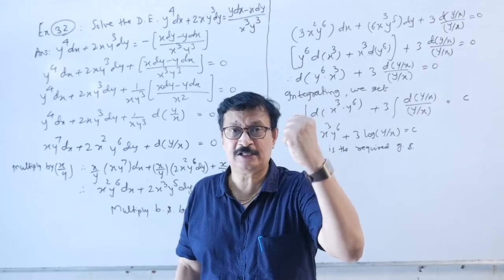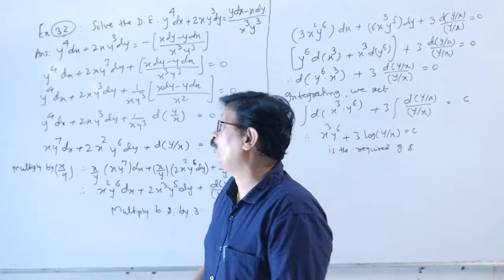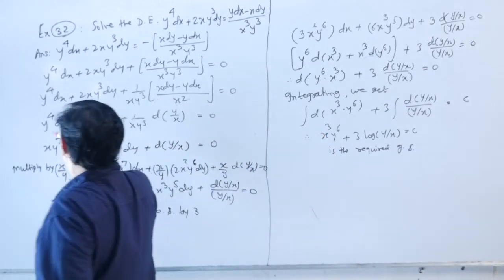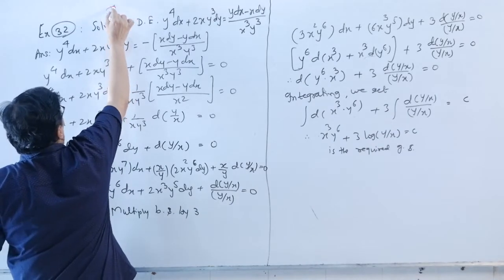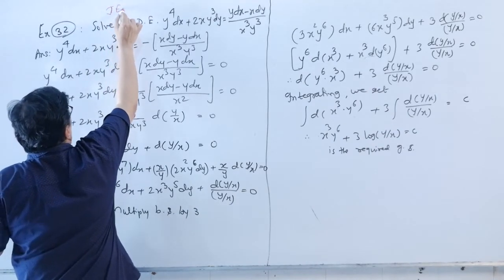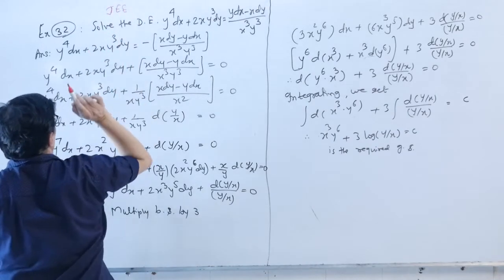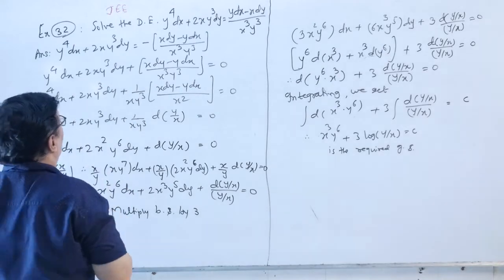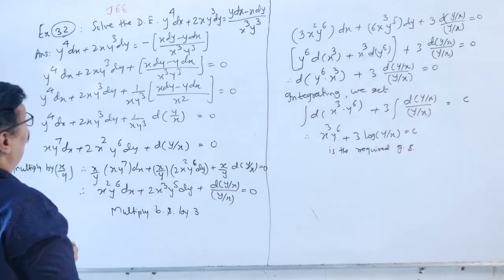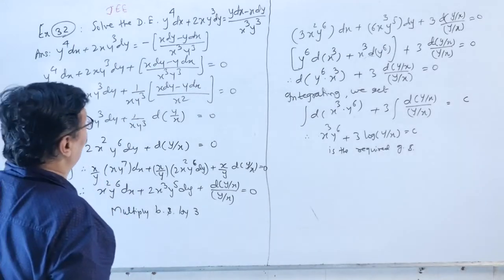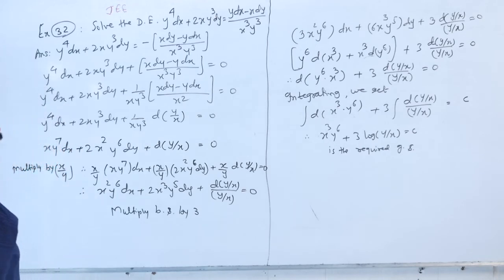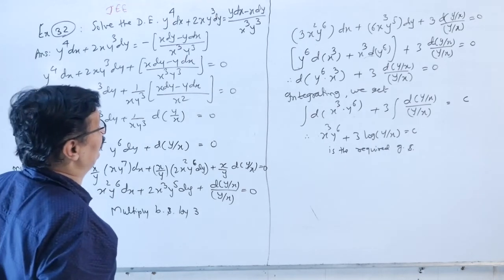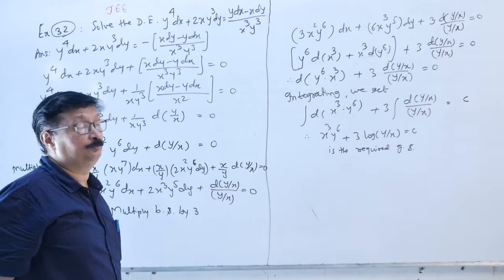Example 32 (fit for JEE Mains and Advanced): Solve y⁴·dx + 2xy³·dy = (y·dx − x·dy)/(x³·y³).